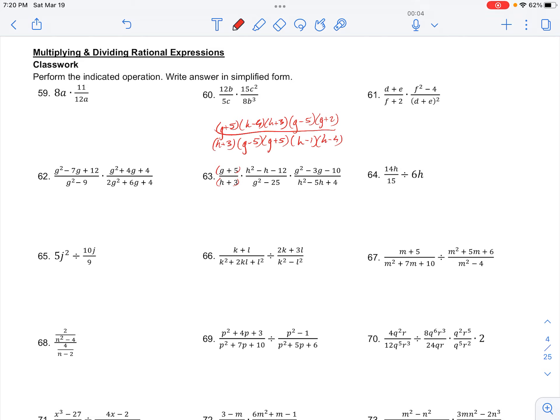And now we're going to go ahead and cancel what we can. So we have g + 5 canceling with g + 5, h - 4 with h - 4, h + 3 with h + 3, and g - 5 with g - 5.